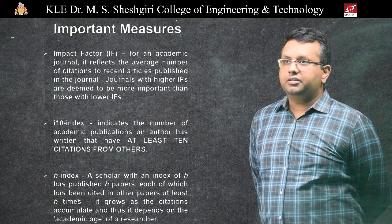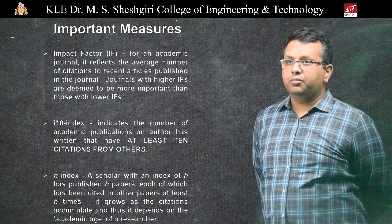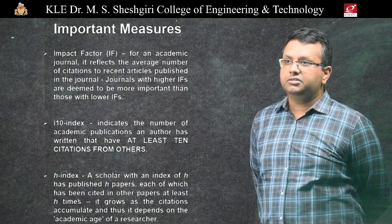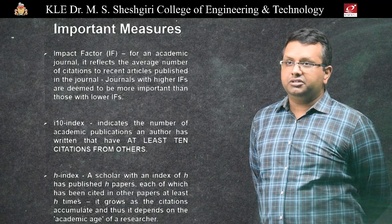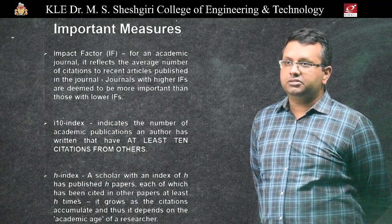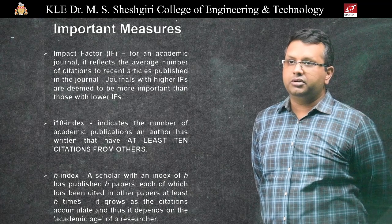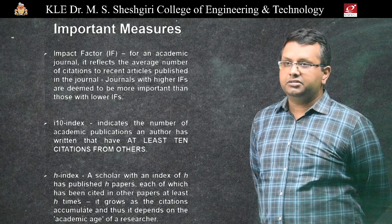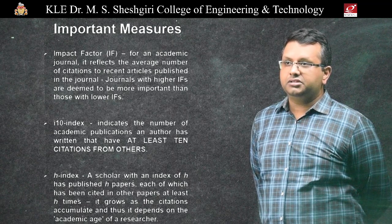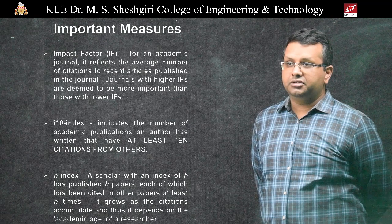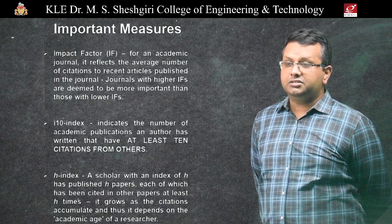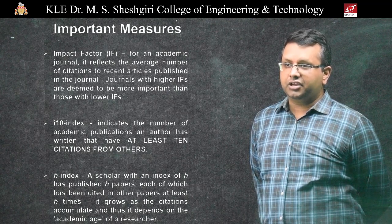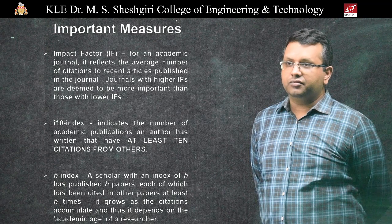Before writing the article, it is important to look at key measures. These include the impact factor of an academic journal, which reflects the average number of citations to recent articles published in that journal — journals with higher impact factors are deemed more important. For a researcher, the i10-index is very important, as it indicates the number of publications an author has written that have received at least 10 citations. You could also consider the H-index, which grows as citations accumulate and is thus dependent on the academic age of the researcher.